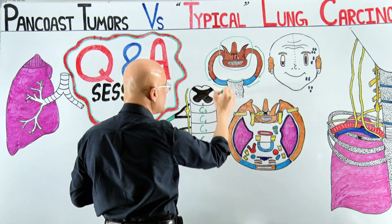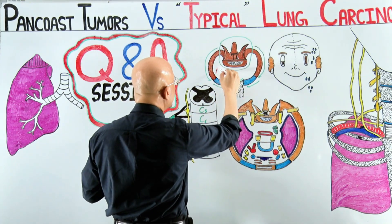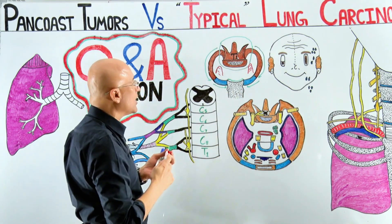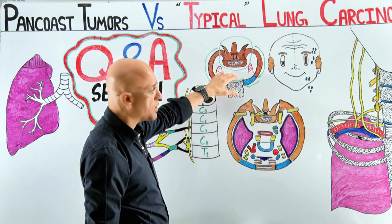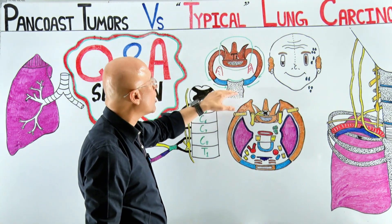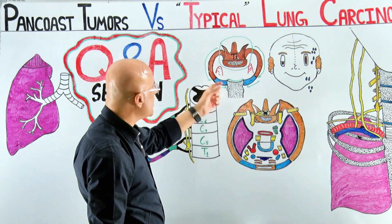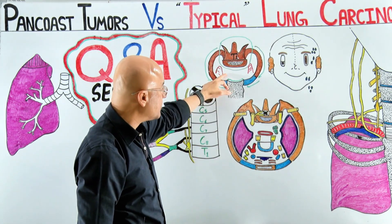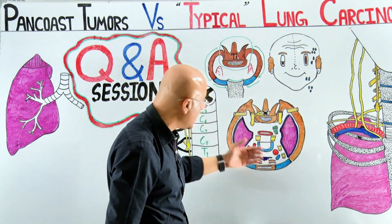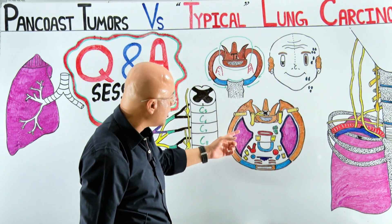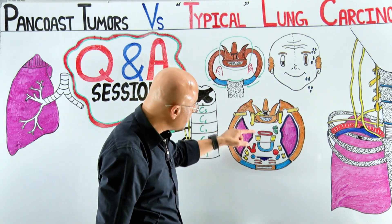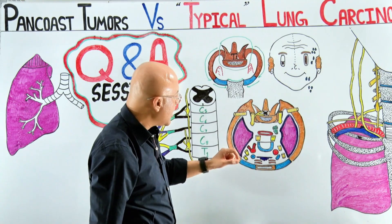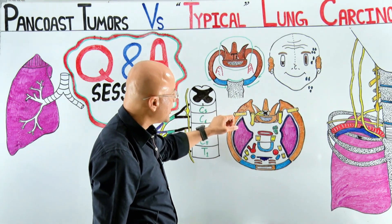The lungs are below this aperture, and the apical part of the lungs protrudes above it on both sides. This area is very important because extremely important structures pass through this aperture — from head and neck to thorax and vice versa. Important structures include the esophagus, trachea, subclavian arteries, subclavian veins, and the thoracic duct on the left side, along with very important neurological structures.